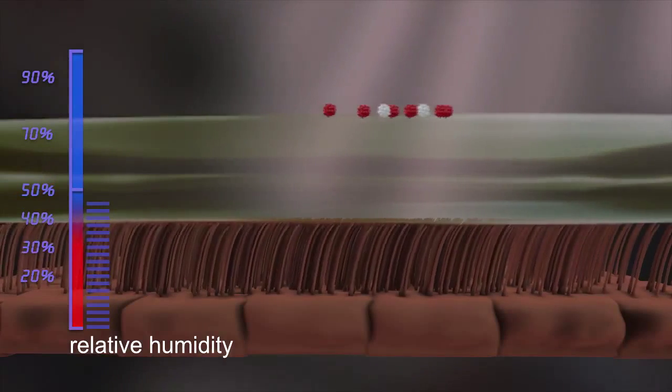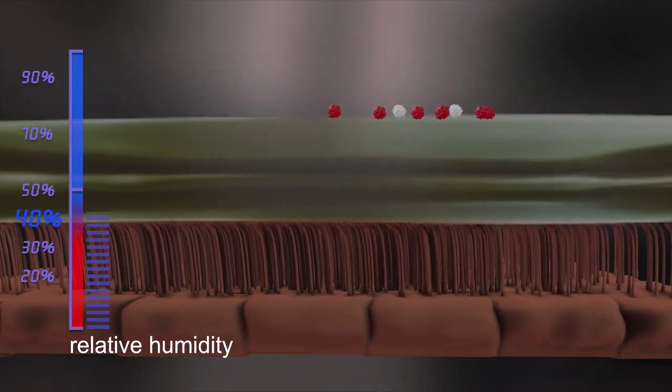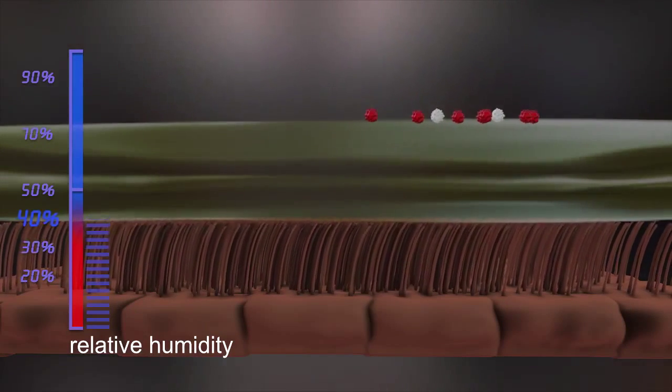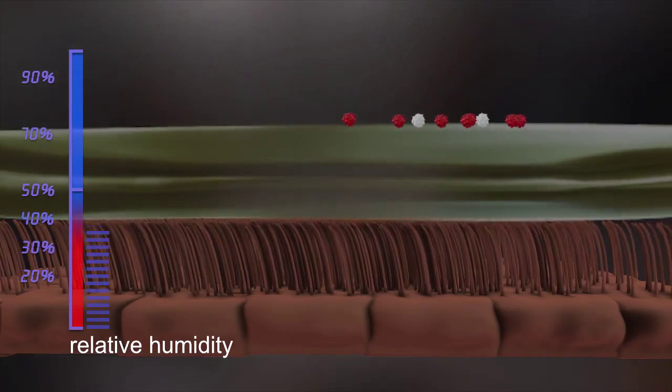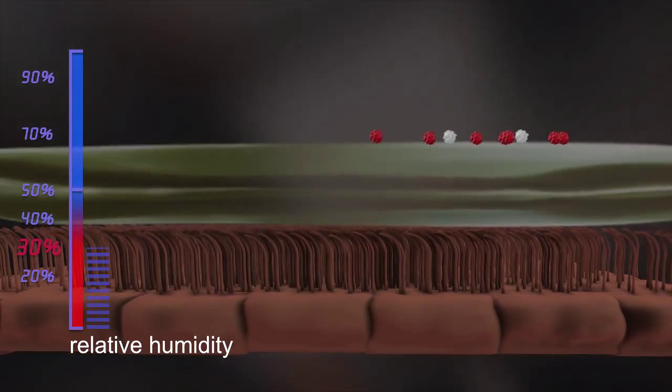As relative humidity drops, however, the saline and gel layers start to dry out. Volume and thickness of the layers shrink and the cilia are progressively pressed down until ultimately they can no longer move at all.